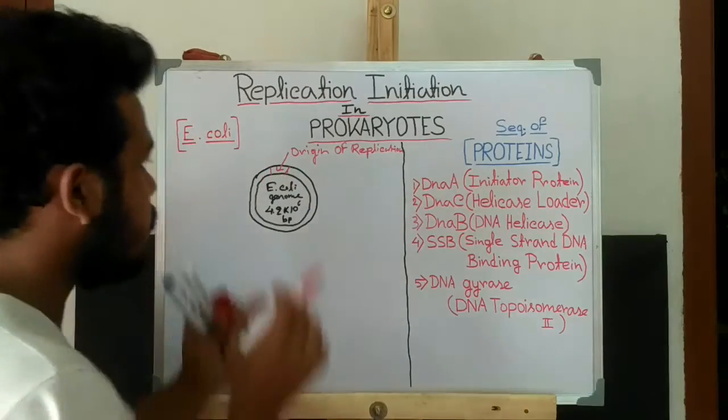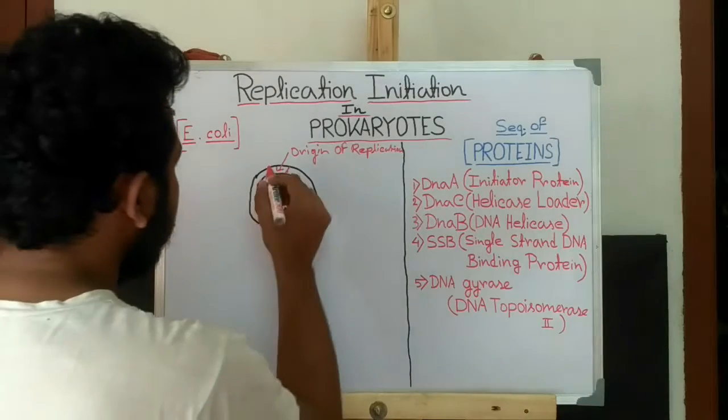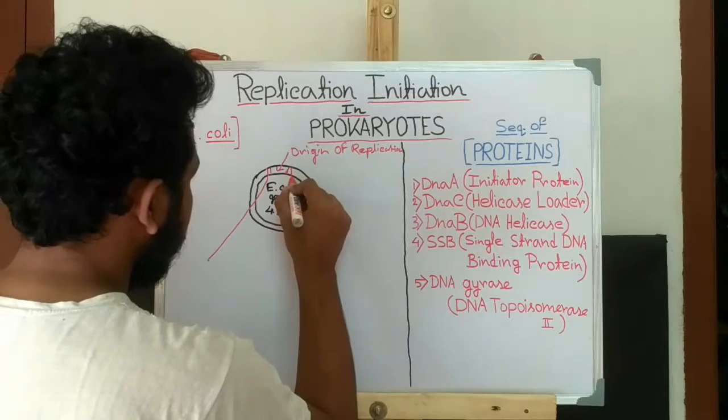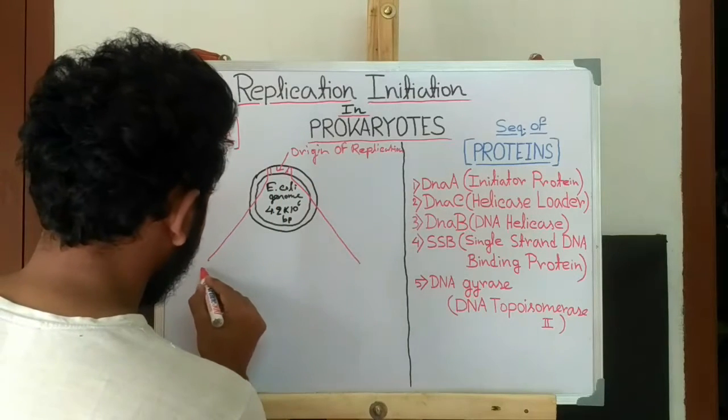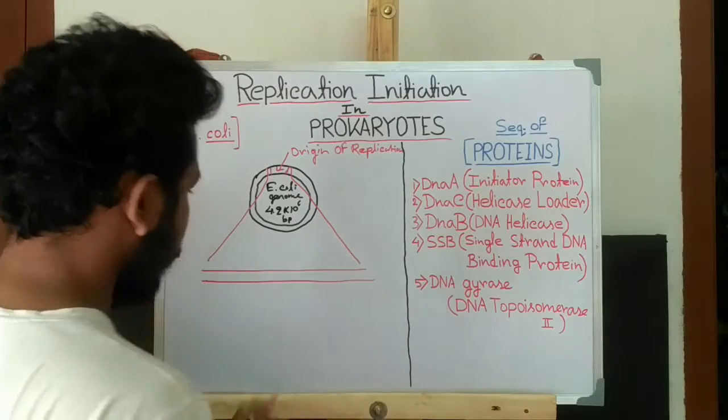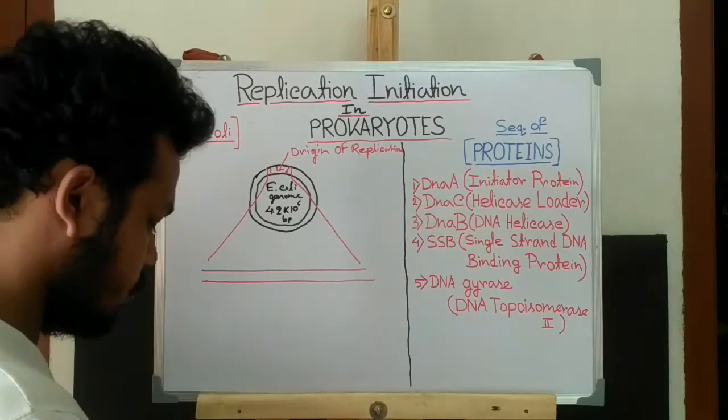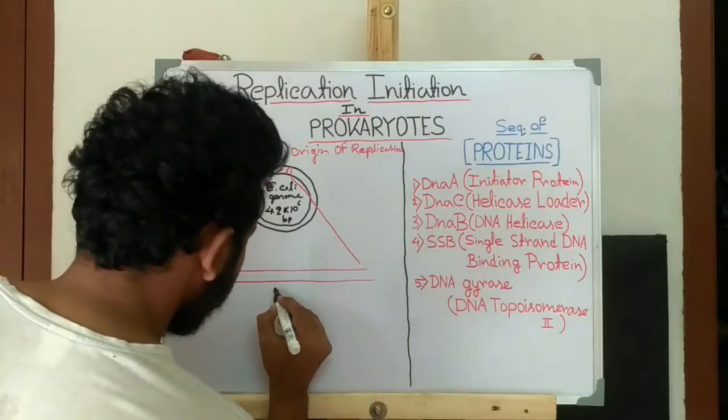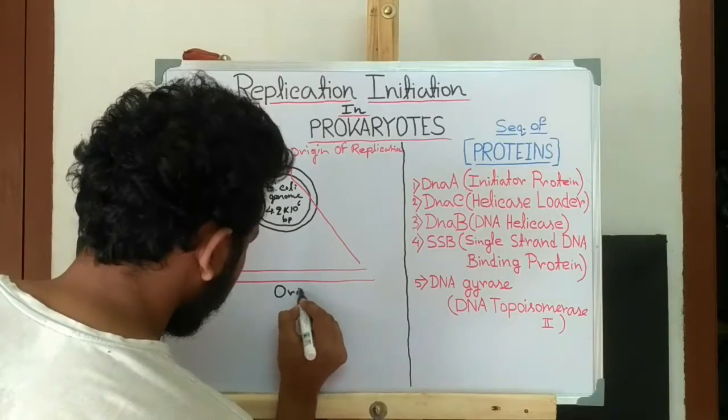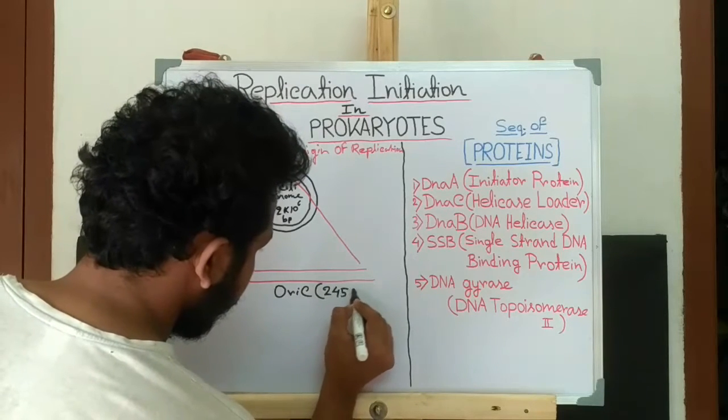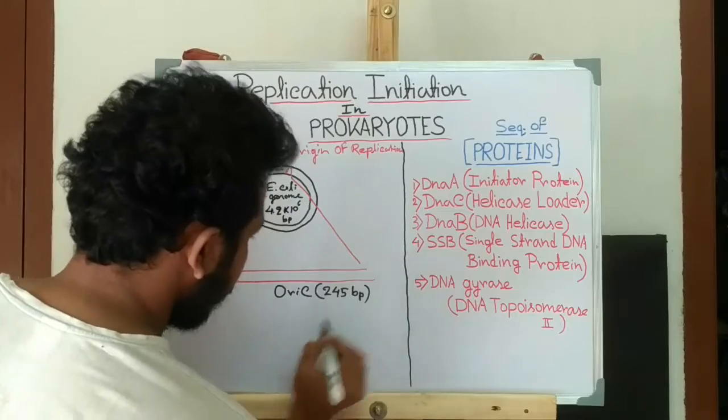Now if we elaborate this origin of replication region, then we can see that this is the origin region and it is called oriC, and it contains 245 base pairs.